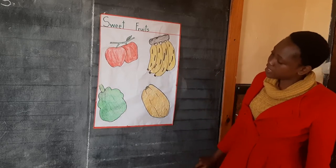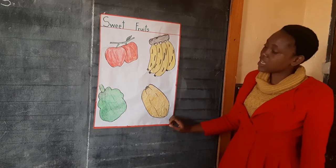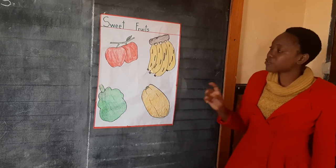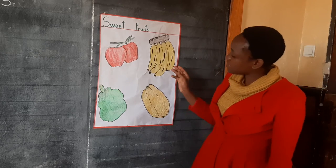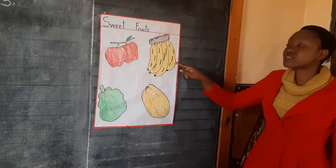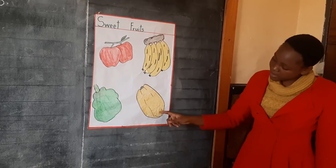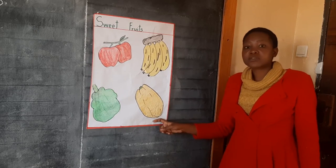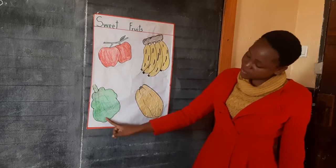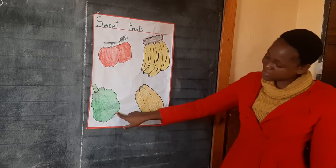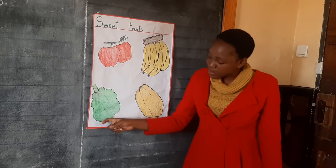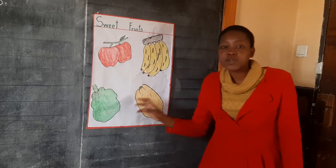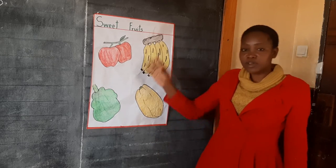The fruits that are on this chart are all very sweet fruits. Here we have the apples — apples are sweet fruits. We also have bananas — bananas are sweet fruits. Then we have this one here, which is a popo. Popo is also a sweet fruit. Then we have this green one here — this one is a jackfruit, which is also a sweet fruit. So we are going to go outside so that we can see some of the other sweet fruits that may not be on our chart.